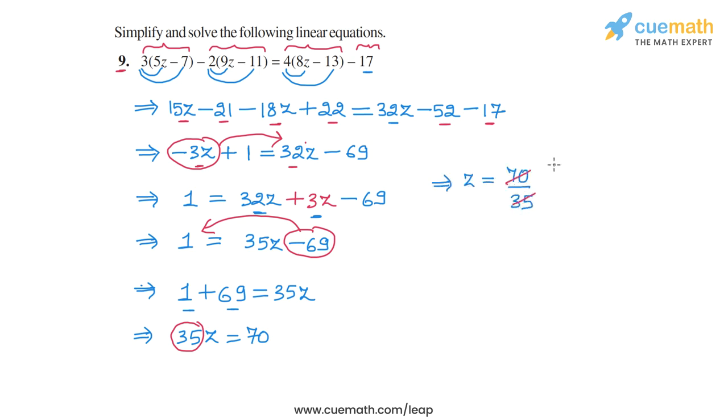And 70 by 35 is 2. So we will get our answer as z is equal to 2. This is the solution of the equation in question 9.